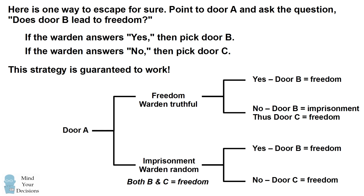So this shows that logically, if you pick door B when the warden answers yes, and if you pick door C when the warden answers no, you are guaranteed to find a door that leads you to freedom. Did you figure it out?